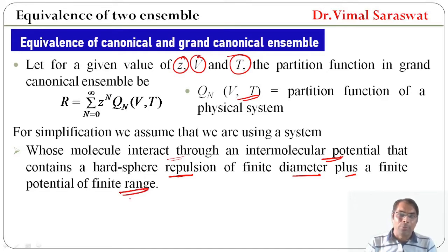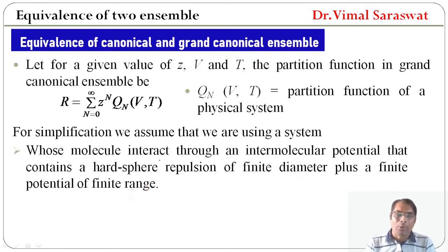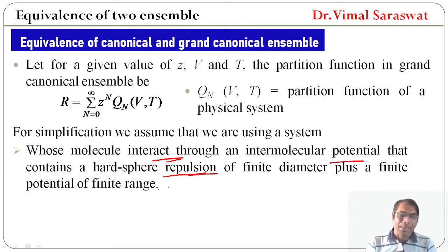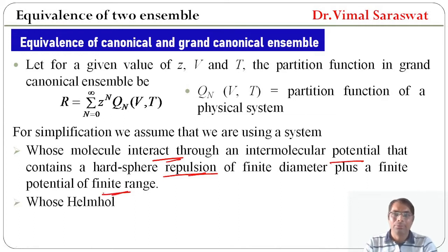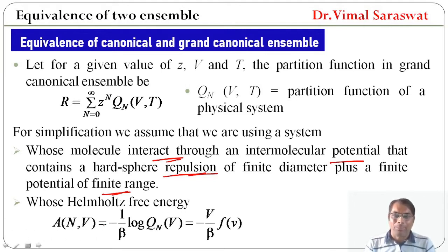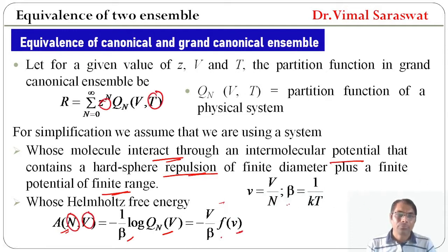For simplification, we assume that we are using a system whose molecules interact through an intermolecular potential that contains a hard sphere repulsion of finite diameter plus a finite potential of finite range, and also whose Helmholtz free energy is given by: A equal to minus 1 upon beta log Q(n,V). This is equal to minus V over beta times f(v), where small v equals capital V over capital N and beta equals 1 over kT, k being Boltzmann's constant.